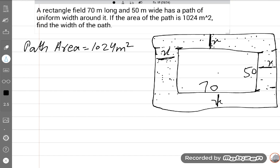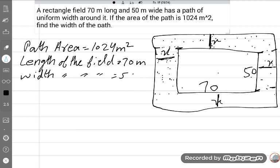If you understood, it is now easy. Length of the field is 70 meters and width of the field is 50 meters. So we can find the area of the rectangular field easily.